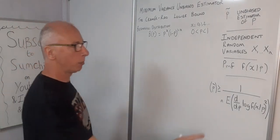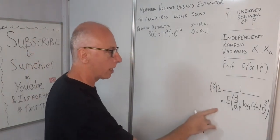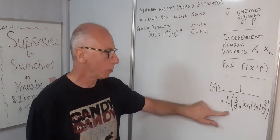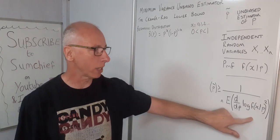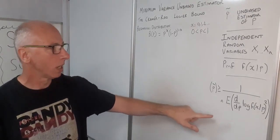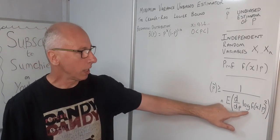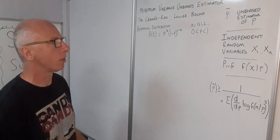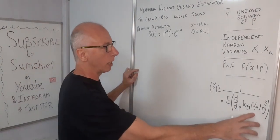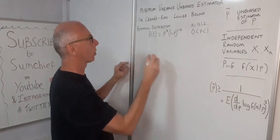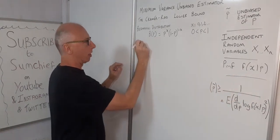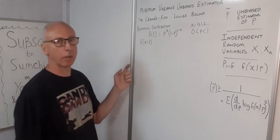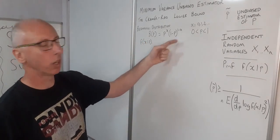The formula we're interested in looks a little intimidating, but we're going to break it down and I'll show you how to do each part. First of all, we need the log of F of X given P. So F of X given P is our probability mass function — essentially the formula for our distribution.